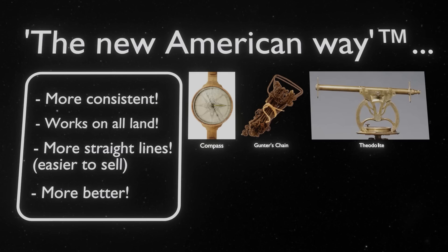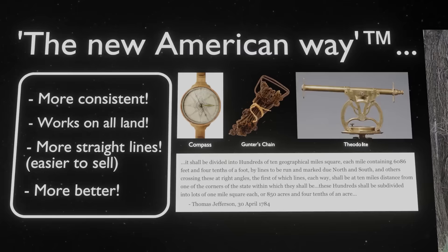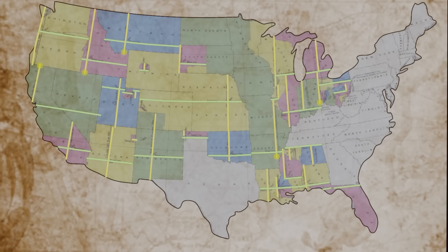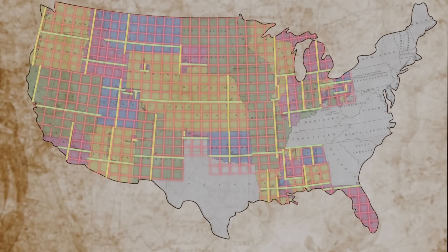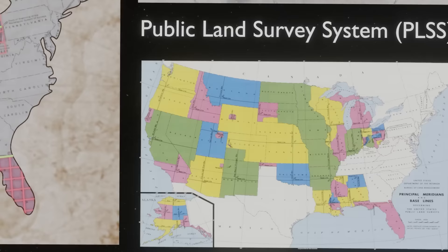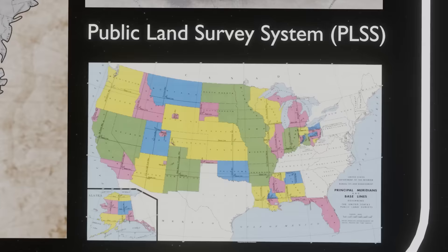Luckily, that was around the time that math and science came around. They now knew exactly how long a mile was and where north is. So they decided on the Public Land Survey System, or PLSS. Start by planning two lines: one baseline going horizontally and one meridian going vertically. Using these two lines, create a grid of six-mile by six-mile squares called townships. Inside each township were 36 smaller one-mile by one-mile squares, each of which could be surveyed and sold to settlers. Using this system, they ended up surveying over three-quarters of America's land, which is why nearly every corner of America on a map is cut up into these squares.